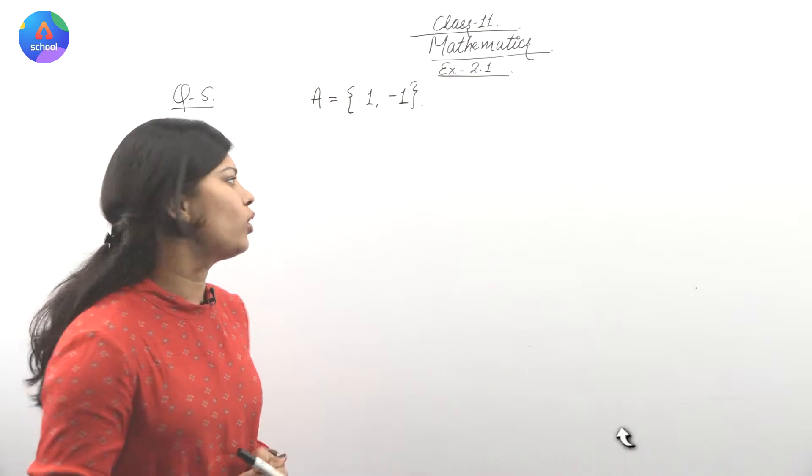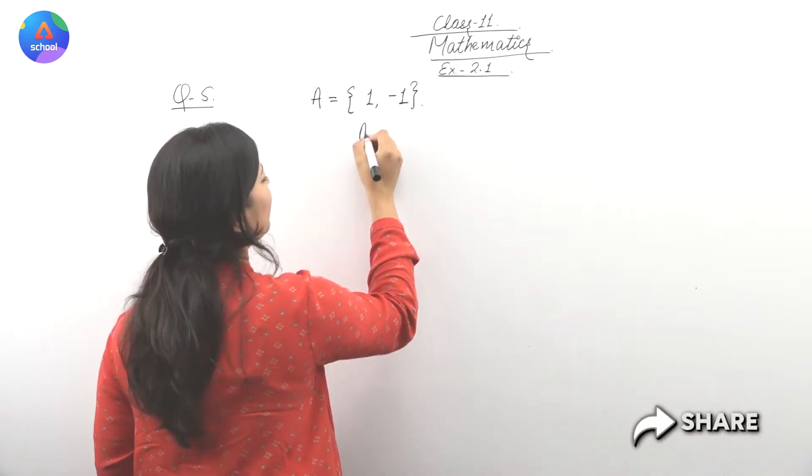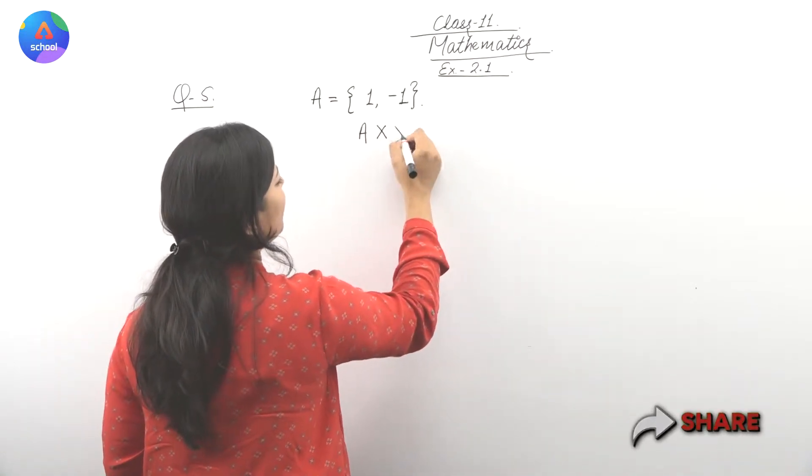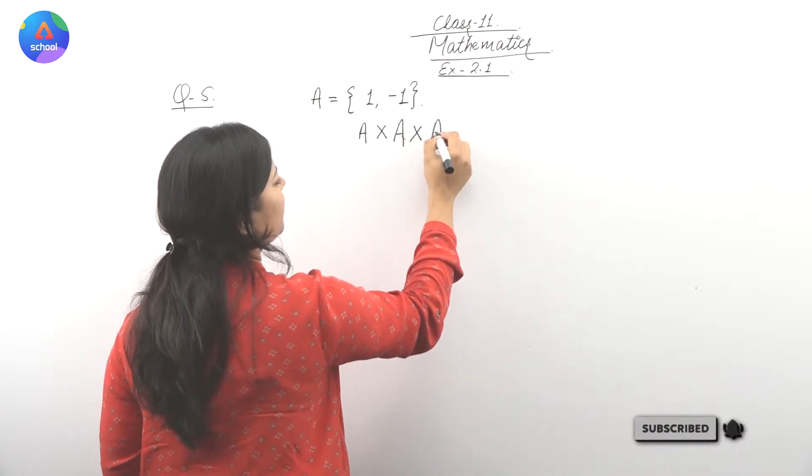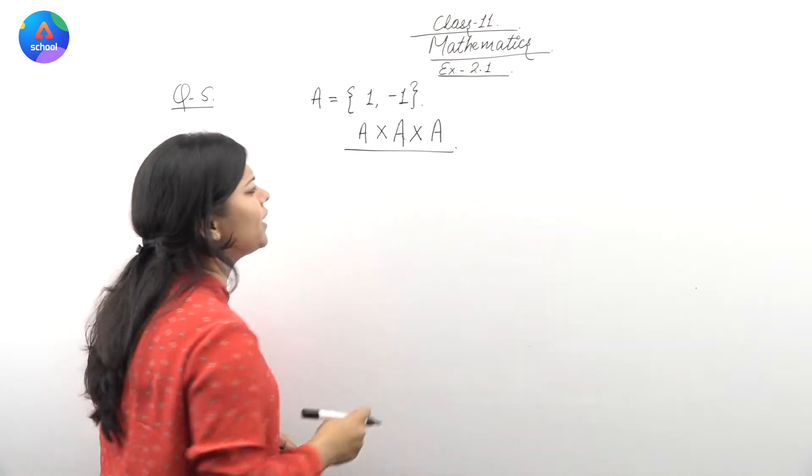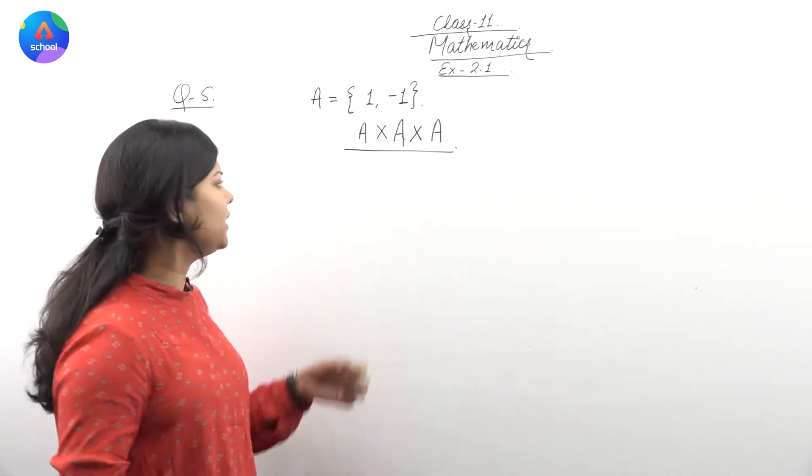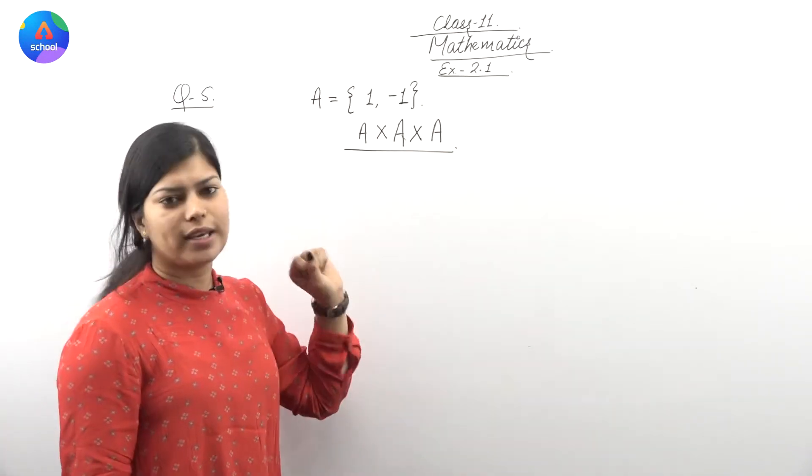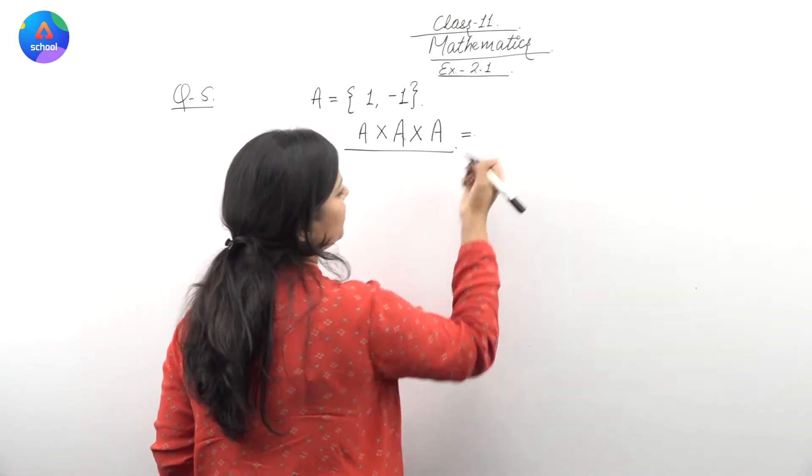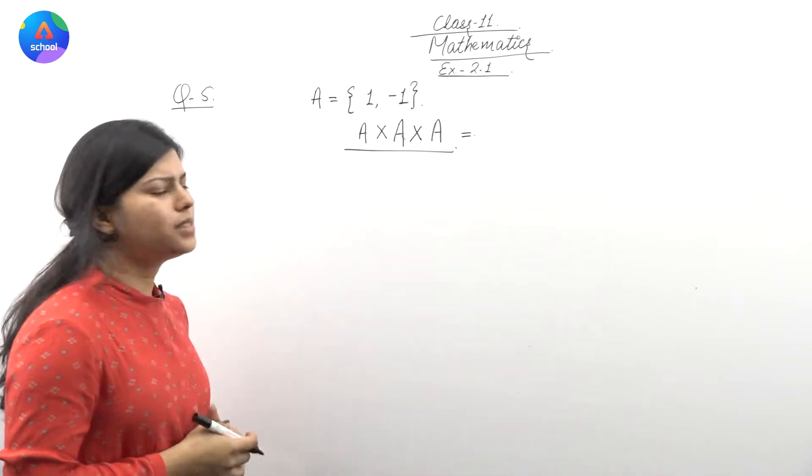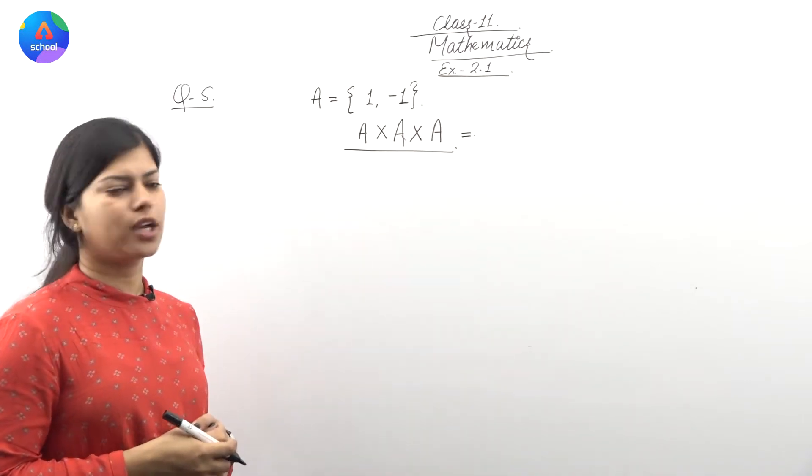Ab find A cross A cross A. Kia find kerna hai hamain? A cross A cross A. Ye jo cartesian product hai, yani ki three sets ko leke, hamain jo cartesian product binaya hai, iske elements yani ki, ye set humain find out karna hai. Sab se pehle isme elements kitne hoonga, ye hum check kertai.